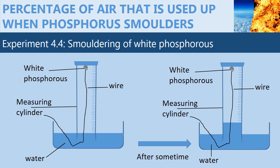Another interesting phenomenon is the spontaneous smoldering of phosphorus in air. It can be used to determine the active part of air. In this experiment, the setup is placed as shown in the figure. At the beginning of the experiment, the level of water in the measuring cylinder is at par with that of the trough.